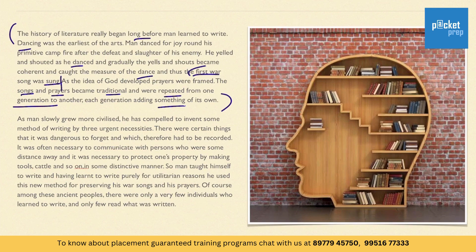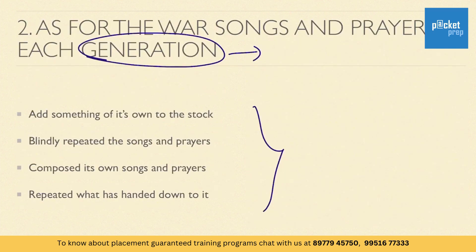After the first war song was sung and the idea of god arose, prayers were framed. The songs and prayers became traditional and were repeated from one generation to another — meaning the prayers were handed down from one generation to another. In this process, each generation added something of its own to the original stock. So the relevant answer among the given alternatives is: 'added something of its own to the stock.'